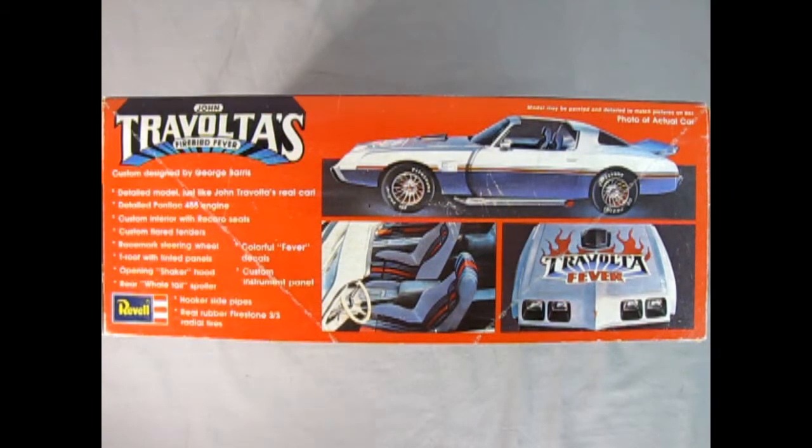On this side of the box we get some more amazing details about John Travolta's Firebird Fever car. It is a custom design by George Barris. This is a detailed model just like John Travolta's real car: detailed Pontiac 455 cubic inch engine, custom interior with Recaro seats, custom flared fenders, race mark steering wheel, T-roof with tinted panels, colorful fever decals, opening shaker hood, rear whale tail spoiler, custom instrument panel, hooker side pipes, and real rubber Firestone SS radial tires.